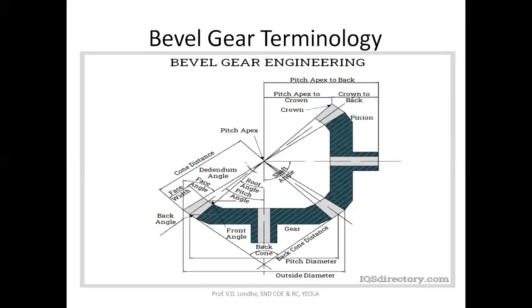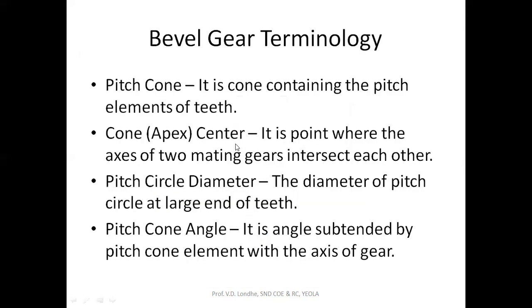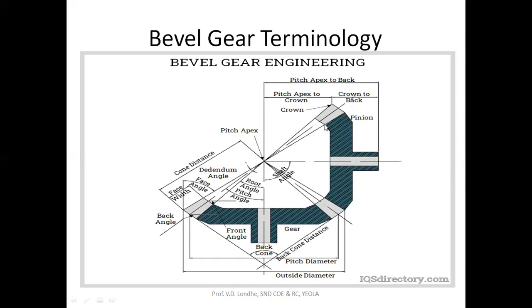Now let's look at bevel gear terminology, covering each and every definition. The first term is the pitch cone. It is the cone which contains the pitch element of the teeth. This triangle shown here is nothing but the pitch cone element, where the pitch cone forms the pitch circle for the bevel pinion or the gear.